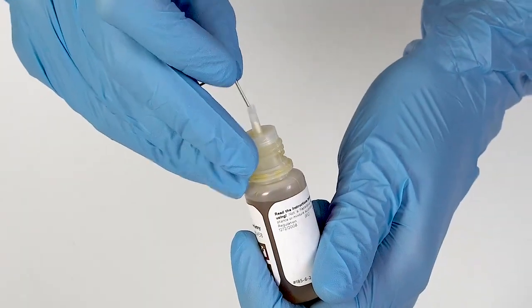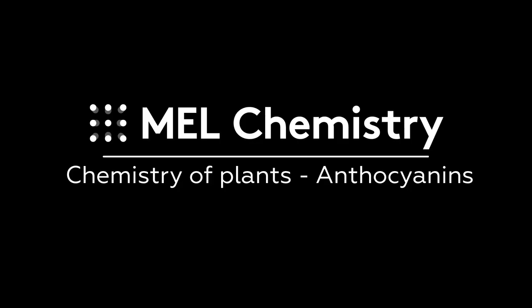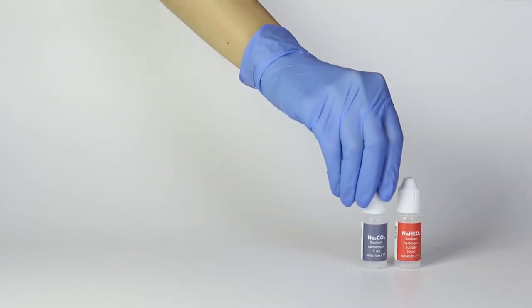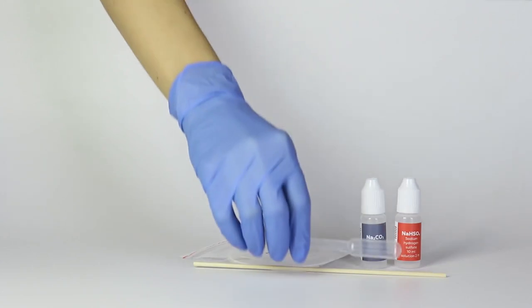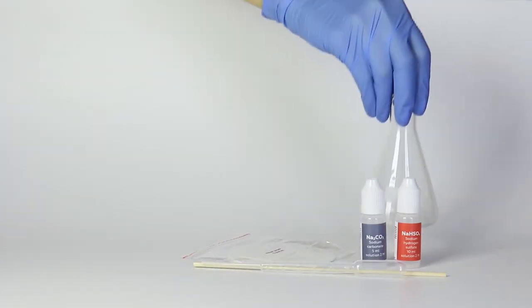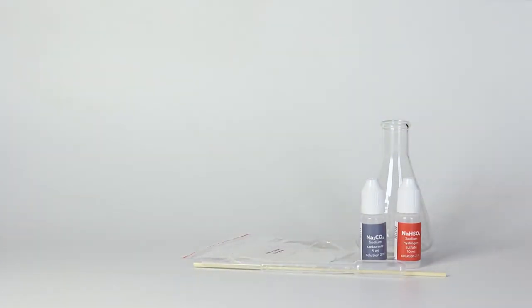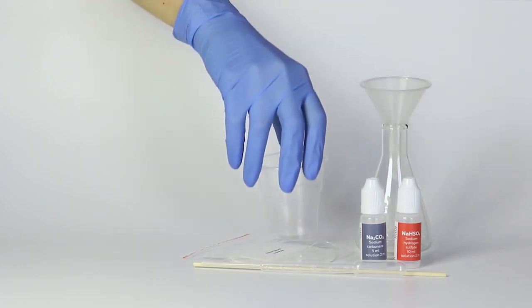Pierce the bottle nozzle with an unbent paper clip. For the anthocyanins experiment, you will need solutions of sodium hydrogen sulfate and sodium carbonate, filter paper, a wooden stick and a pipette. You will also need the flask, the funnel and two disposable cups from your starter kit.